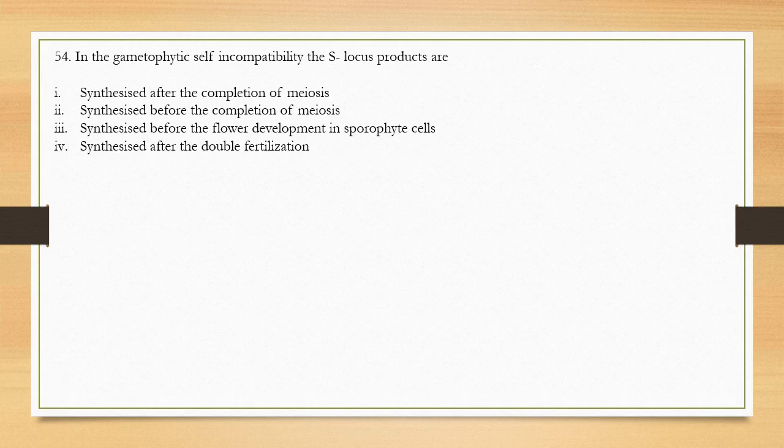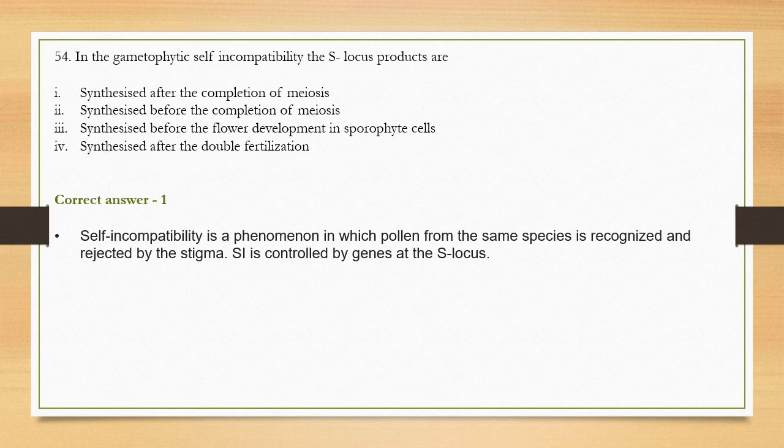Question number 54: In gametophytic self-incompatibility, the S-locus products are — option 1: synthesized after completion of meiosis, option 2: synthesized before completion of meiosis, option 3: synthesized before flower development in sporophyte cells, option 4: synthesized after double fertilization. The correct answer is option 1 — the gametophytic self-incompatibility gene is synthesized after completion of meiosis.